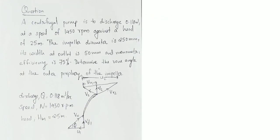We have a problem with the centrifugal pump. The centrifugal pump is to discharge 0.118 m³/s at a speed of 1450 rpm against a head of 25 meters. The impeller diameter is 250 mm, its width at the outlet is 50 mm, and there is 75% manometric efficiency. Determine the vane angle at the outer periphery of the impeller.